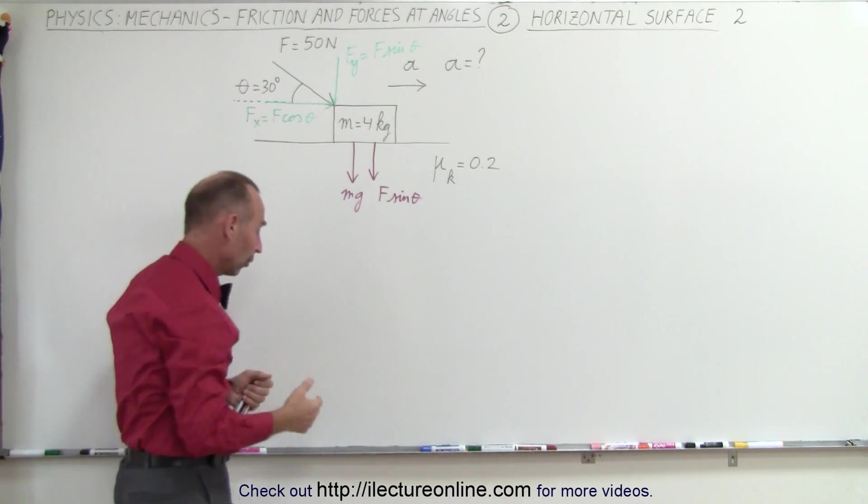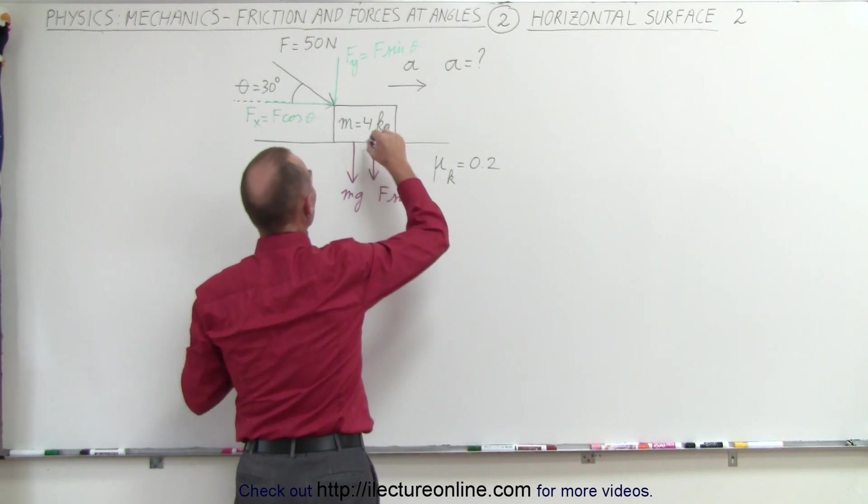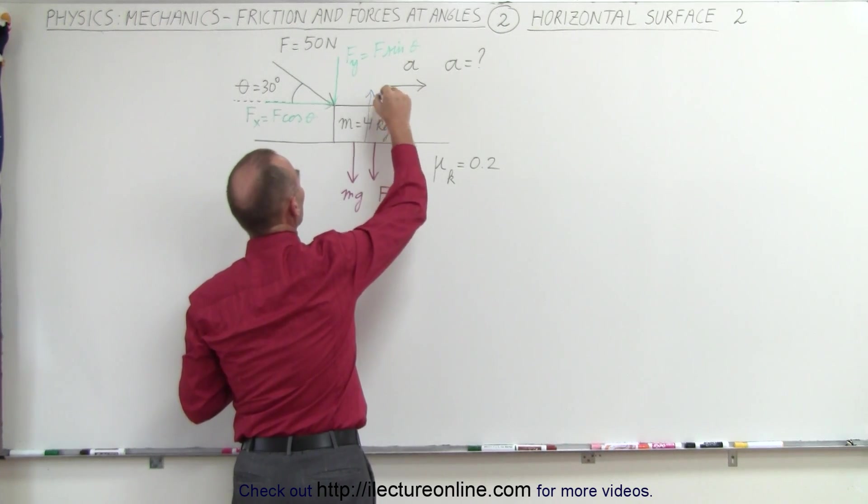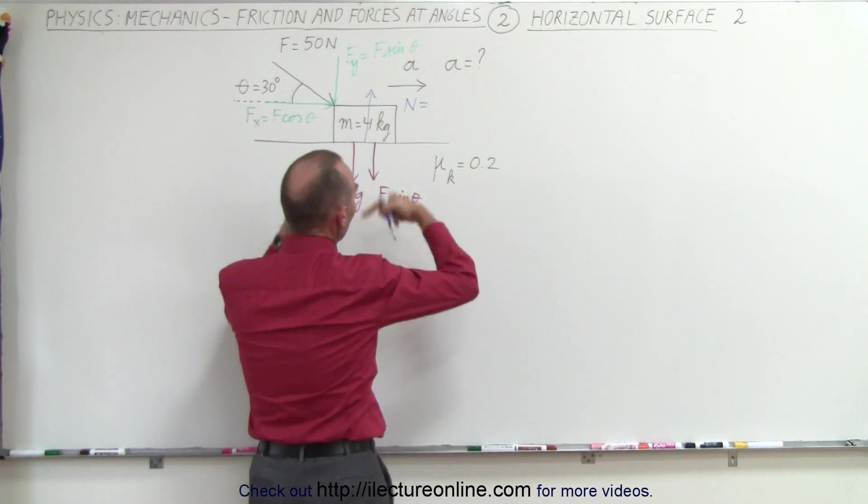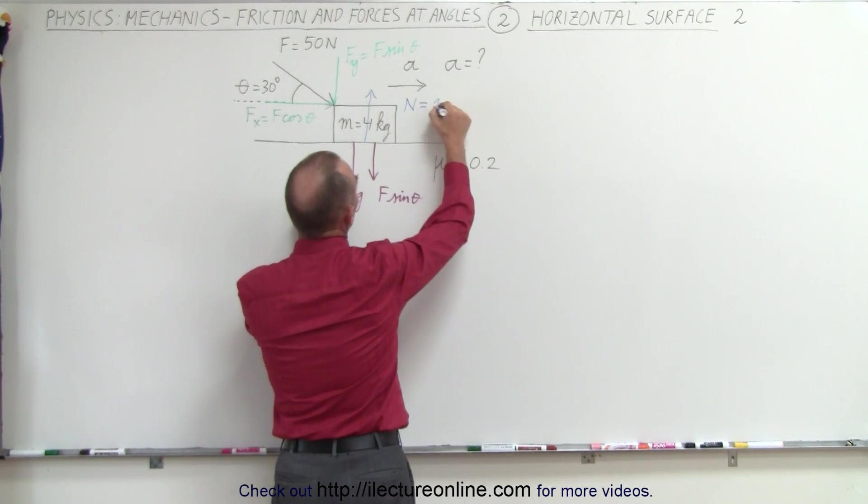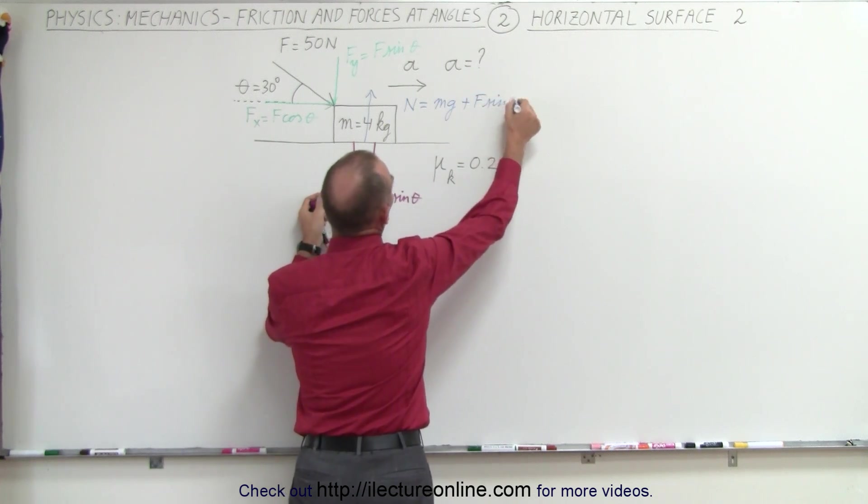We then have an opposite force, a reactionary force, the normal force pushing back. So the normal force is going to be equal to the sum of these two. It's going to be in the opposite direction, but the magnitude is going to be mg plus f times the sine of theta.